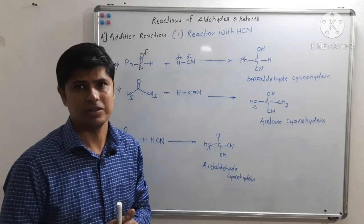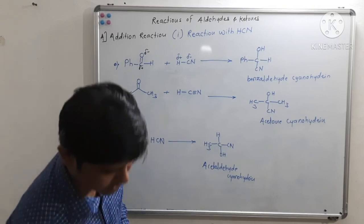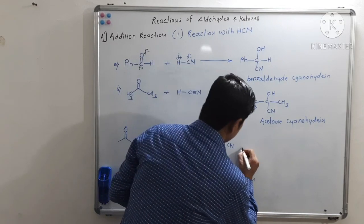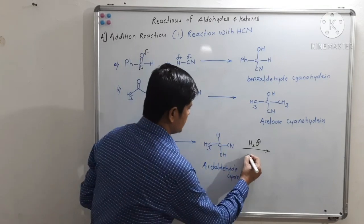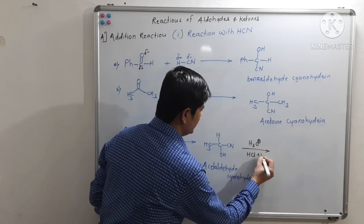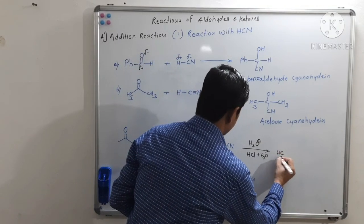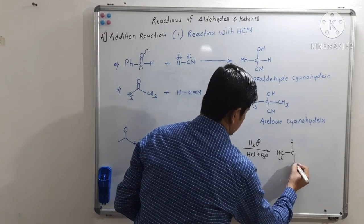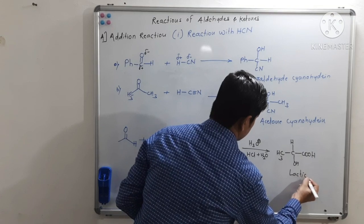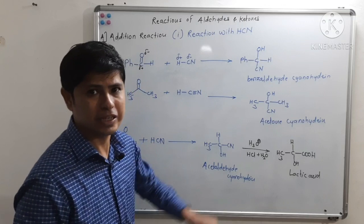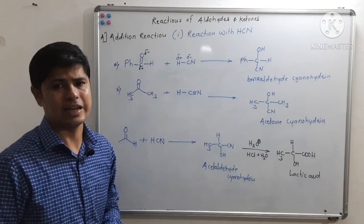What is the importance of this reaction? If we hydrolyze the cyanohydrin product by reacting with dilute HCl and water, we can prepare lactic acid from acetaldehyde cyanohydrin through this reaction with hydrogen cyanide.